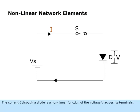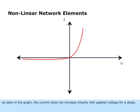The current I through a diode is a nonlinear function of the voltage V across its terminals. As seen in the graph, the current does not increase linearly with applied voltage for a diode.